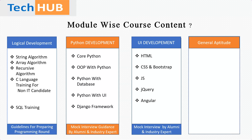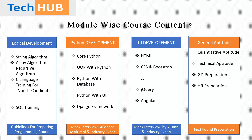We have one more module: General Aptitude. In this module, we teach quantitative aptitude, technical aptitude, GD preparation, and HR preparation. We designed this module because as a fresher, when you apply to any company, they first arrange an aptitude test. So we cover all four areas: quantitative, technical, GD, and HR preparation.